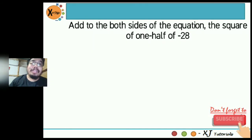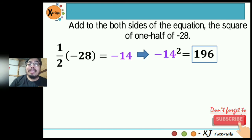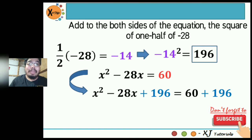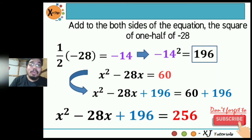The next step is to add to both sides the square of one half of b, where b is negative 28. One half of negative 28 is negative 14, and negative 14 squared is 196. We add 196 to both sides: x squared minus 28x plus 196 equals 60 plus 196. The sum of 60 and 196 is 256. So our equation becomes x squared minus 28x plus 196 equals 256.